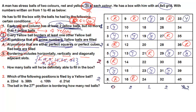Since the minimum condition equals exactly the number of balls remaining, the minimums become exact: row 2 gets exactly 1 yellow ball, row 4 gets exactly 2, row 6 gets exactly 2, and row 8 gets exactly 2. There is no flexibility; these counts are fixed.